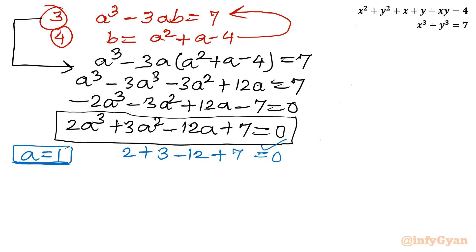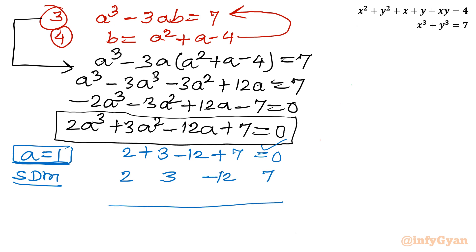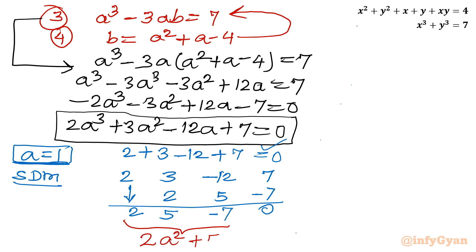Using synthetic division with a = 1, the coefficients of the cubic are 2, 3, −12, 7. Performing synthetic division gives the remaining coefficients 2, 5, −7, with remainder 0. These are the coefficients of the quadratic equation: 2a² + 5a − 7 = 0.